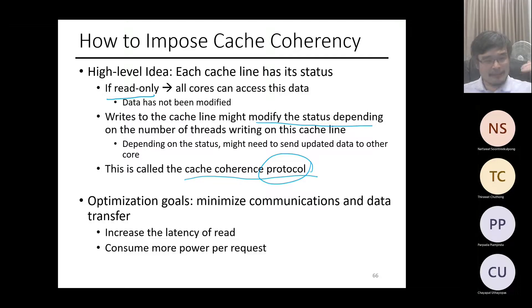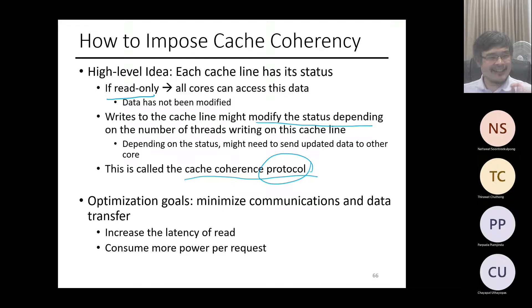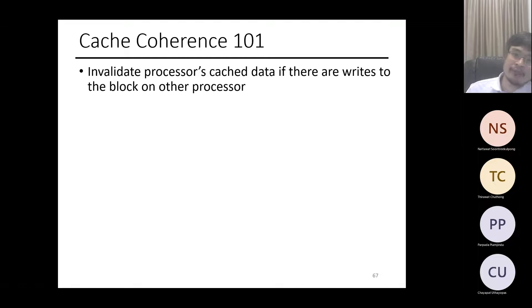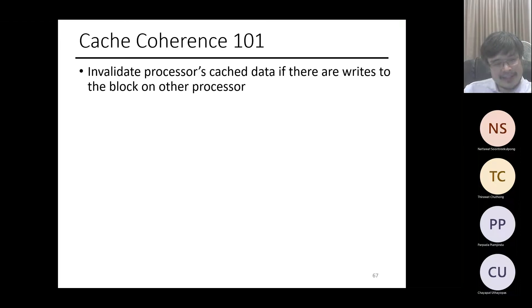The goal is to minimize communication cost — how can we play this cache coherence game while limiting the number of messages between processors and the amount of data transferred, because that decreases performance. The simplest thing you can do: if someone else modifies your data, you invalidate your copy of that block and don't use it anymore.